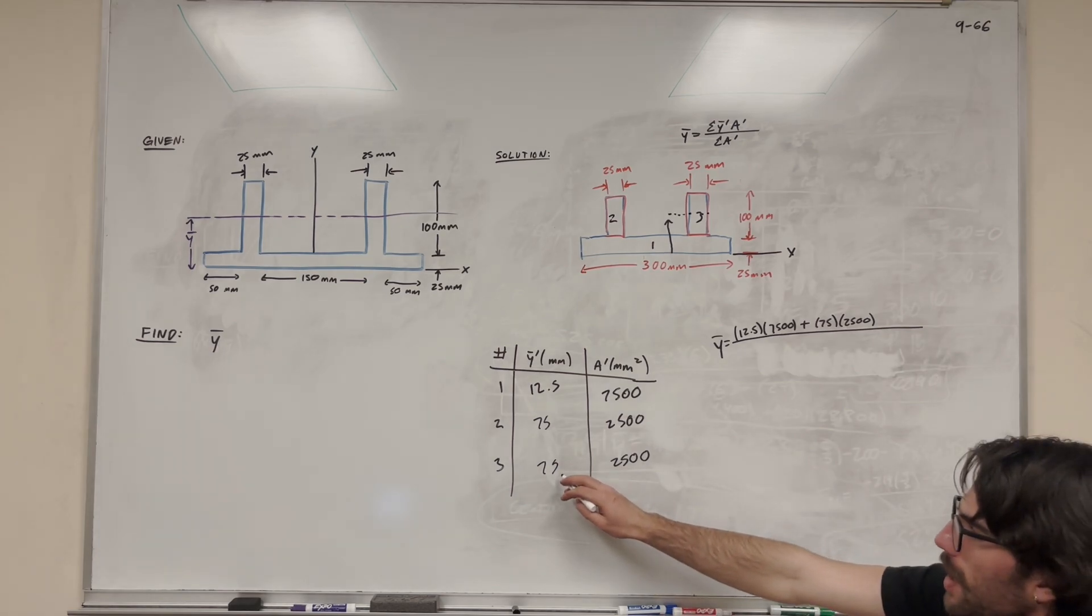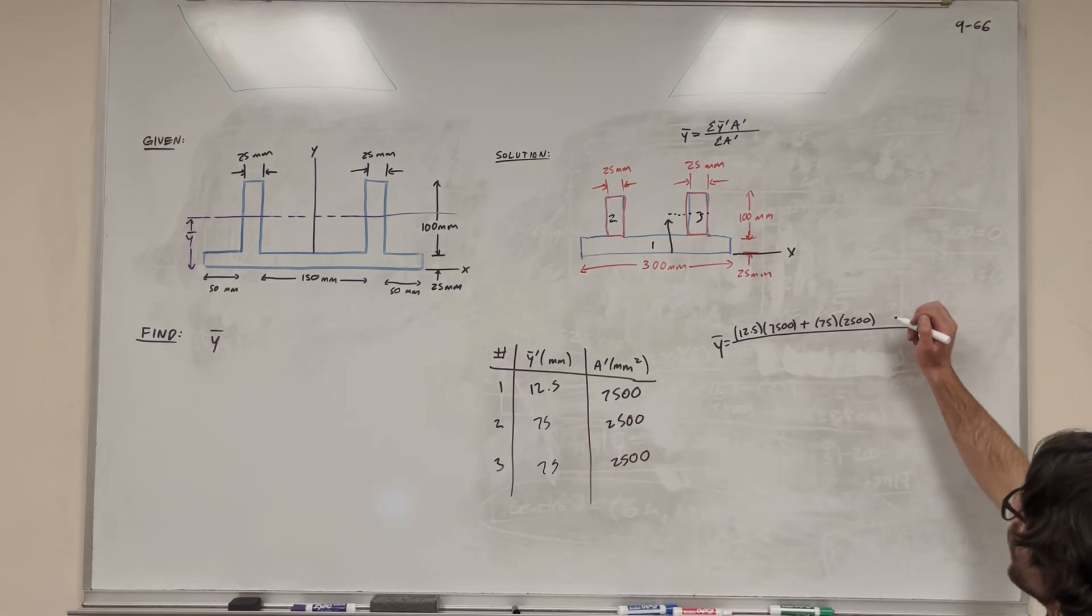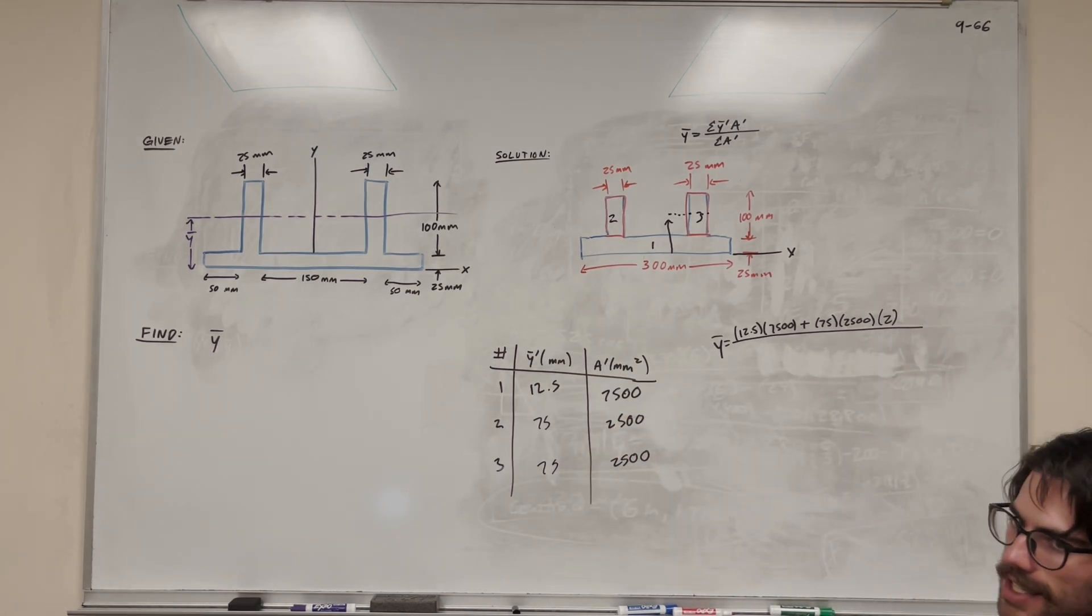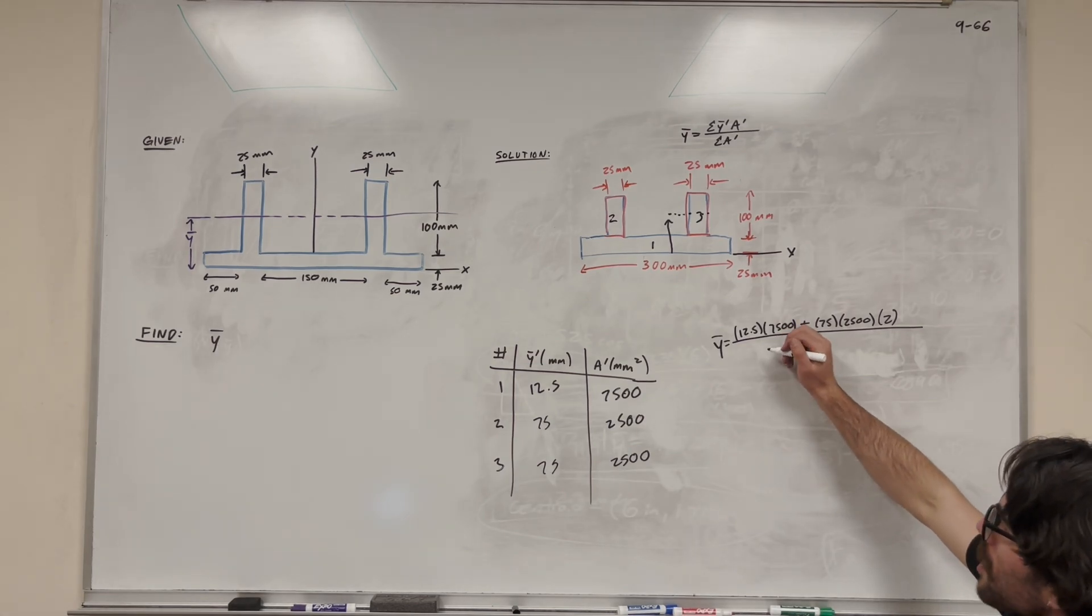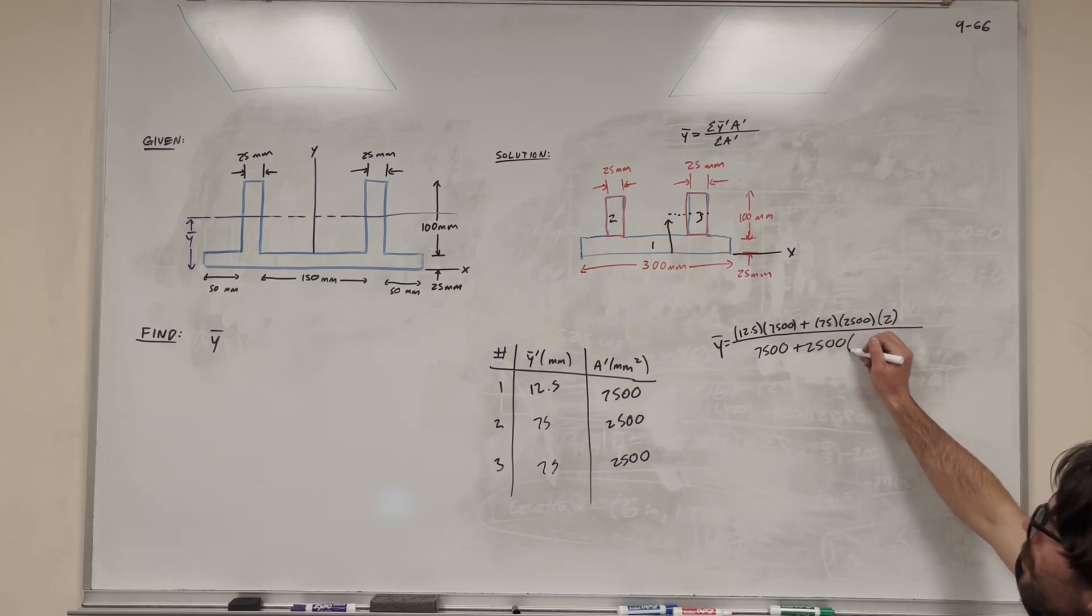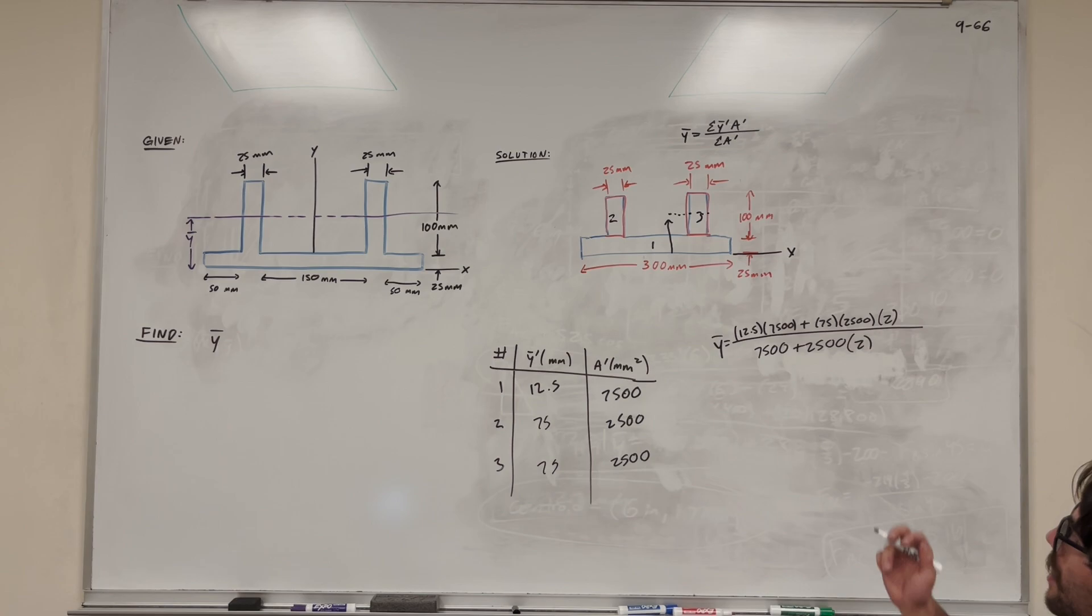Then we can add the second one, but because this is the same as this shape, we can just multiply it by 2 instead of adding another one just to save us some time. Now on the bottom, we're going to add up all the areas: 7,500 plus 2,500, and then we add another 2,500, but we can just multiply that one by 2 to get a simpler equation.